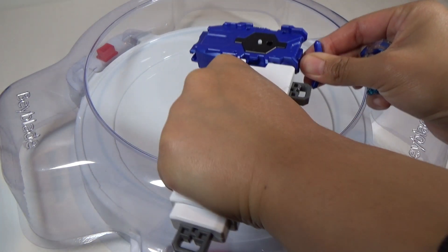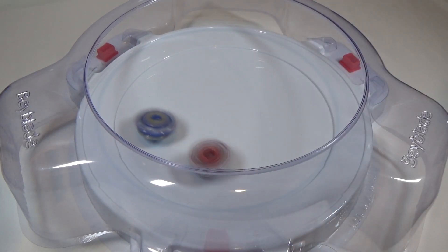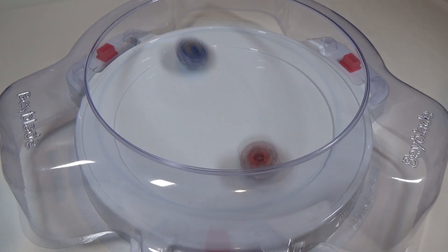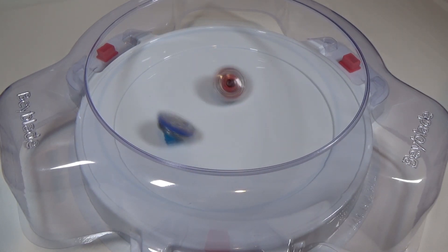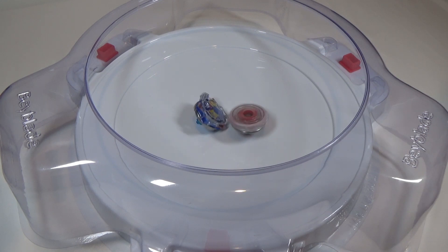Round three. Three, two, one, go! Aw, too bad for Valkyrie. Spriggan takes round three.